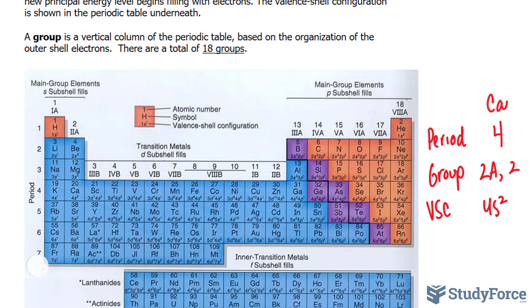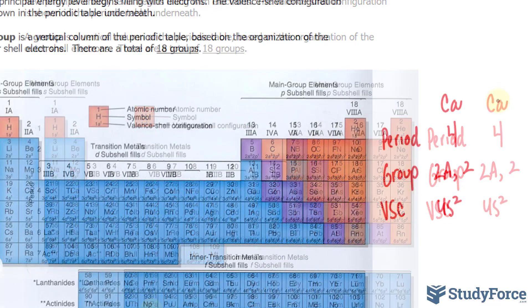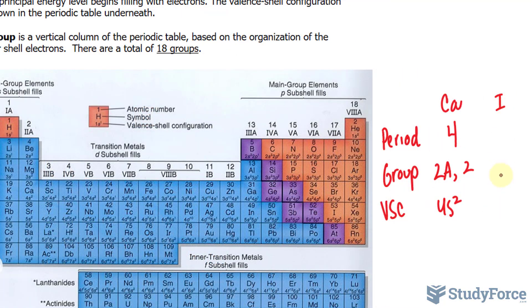Let me show you iodine and lead. Iodine is found right here. It happens to be a halogen, which is the family name for all group 17 elements. So iodine is group 17, 7a, or 17. Its valence shell configuration, as you can see here, is 5s2, 5p5, and it's found in the 1, 2, 3, 4, 5th period.